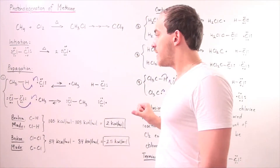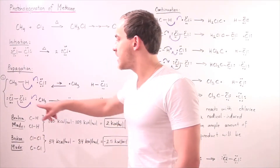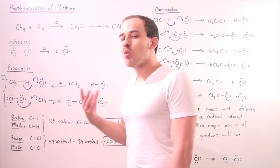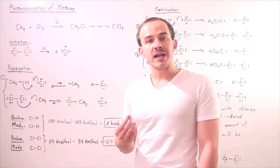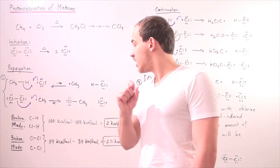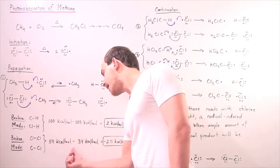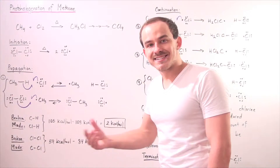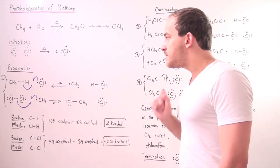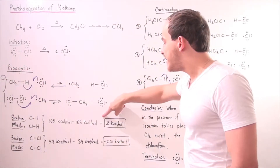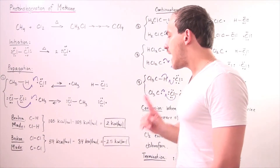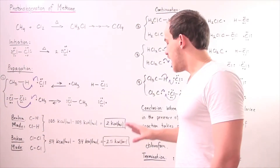In the second step of propagation, the Cl-Cl bond is broken and a carbon-chlorine bond is made. Breaking the Cl-Cl bond requires 59 kcal/mol, while forming the C-Cl bond releases 84 kcal/mol. So 59 minus 84 gives −25 kcal/mol — we release an overall 25 kcal/mol. Even though the first step is endothermic, the second step is so much more exothermic that the overall reaction is, in fact, exothermic.